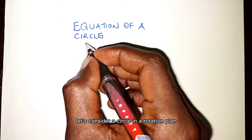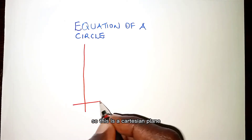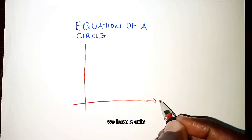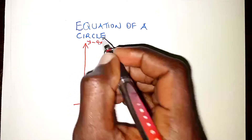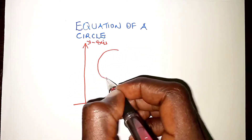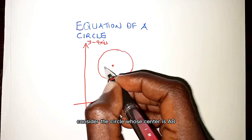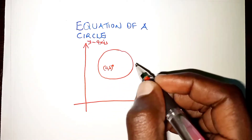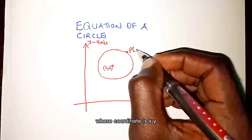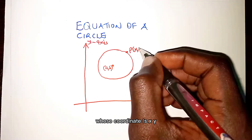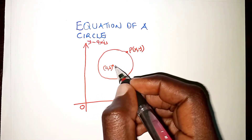Before we get to that, let's consider a circle in a Cartesian plane. We have the x-axis and the y-axis. Consider this circle whose center is (a, b), and let's also have a general point on the circumference, point P, whose coordinates are (x, y).